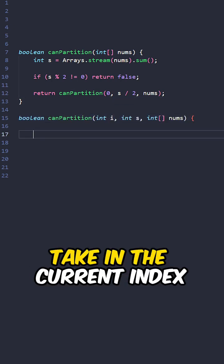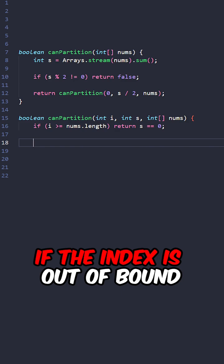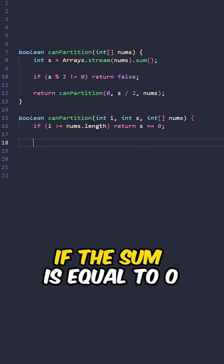Now let's implement the helper method taking the current index, target sum, and input array. If the index is out of bounds, return true if the sum equals 0.